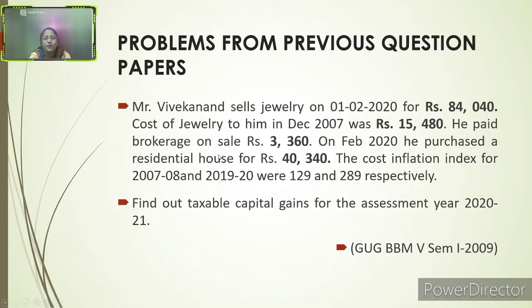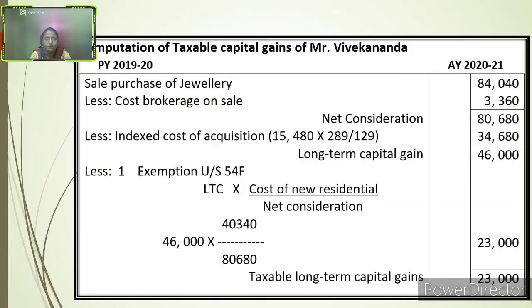This is a simple problem. Now let us see how the indexed cost of acquisition is calculated. Computation of taxable capital gains of Mr. Bebekana: Sale price of jewelry = rupees 84,040. Less brokerage on sale = rupees 3,360. Net consideration = rupees 80,680. Indexed cost of acquisition = 15,480 × 289 ÷ 120 = rupees 34,680. Deducting this gives long-term capital gain before exemption = rupees 46,000.